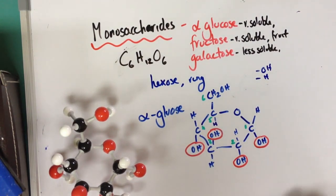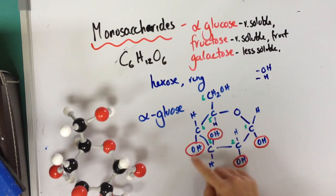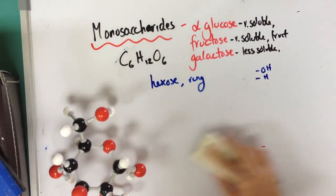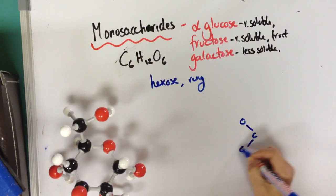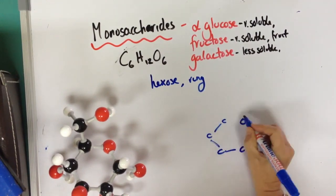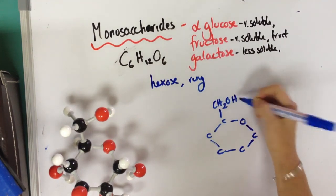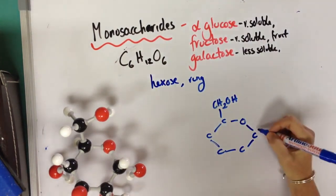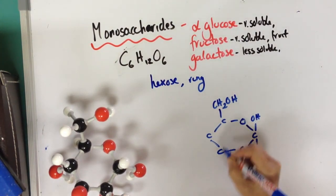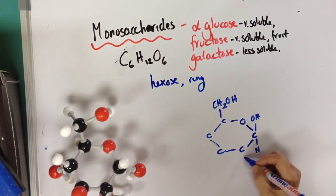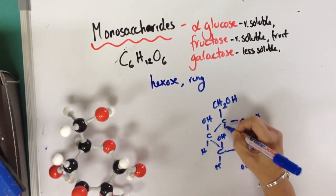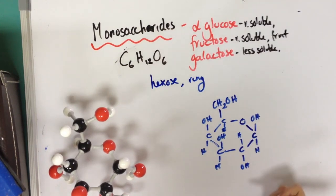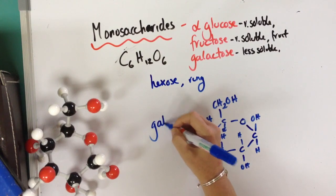The next one to know is galactose. Very similar to alpha glucose, but your hydroxyl groups are in a slightly different order. Again, you've got your carbons in the ring structure with CH2OH at the top. All that changes is that instead of the pattern being down, down, up, down, we have a different pattern: up, down, up, up. You fill your hydrogens in accordingly. Very similar, but this is galactose.